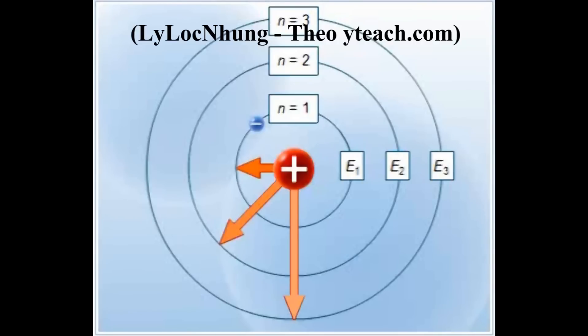The energy of an orbit increases with its distance from the nucleus, since energy must be supplied to move the electron further away from the nucleus. An atom with all its electrons in the lowest possible orbits is said to be in the ground state.